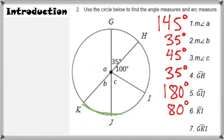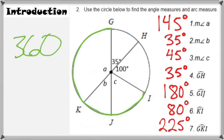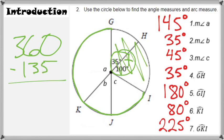Arc KI means you start at K and end at I. Since angle B is 35 degrees and angle C is 45 degrees, simply add those together to get arc KI as 80 degrees. Arc GKI — starting at G, going in the direction of K, stopping at I — is 225 degrees total. Take 360 degrees for the entire circle, subtract the two known angles of 35 and 100 (totaling 135 degrees), and you're left with 225 degrees for arc GKI.